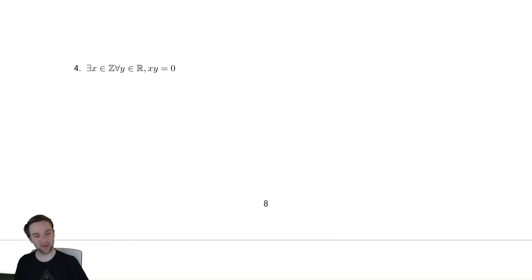This last statement looks very obtuse, but it's claiming that the number zero exists is actually what it's doing. So this says that there is an integer such that no matter what you multiply it by, no matter what real number, you get zero. So this is talking about the existence of zero.